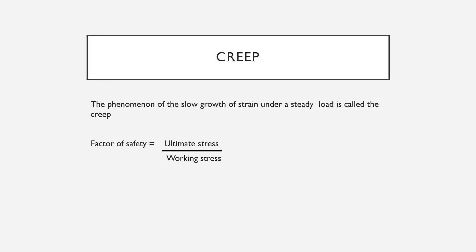The next term is creep — the phenomenon of slow growth of strain under a steady load is called creep. One of the most important factors is the factor of safety. The stress to which a material may be subjected in practice must be considerably less than the ultimate stress; this is called the working stress. The ratio of ultimate stress to working stress is called the factor of safety.